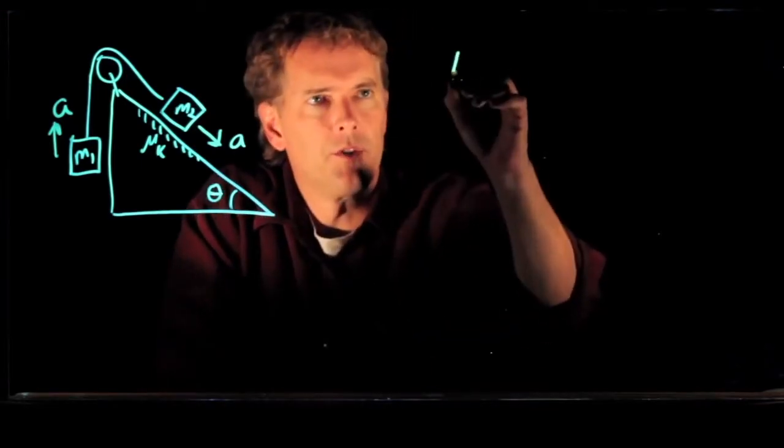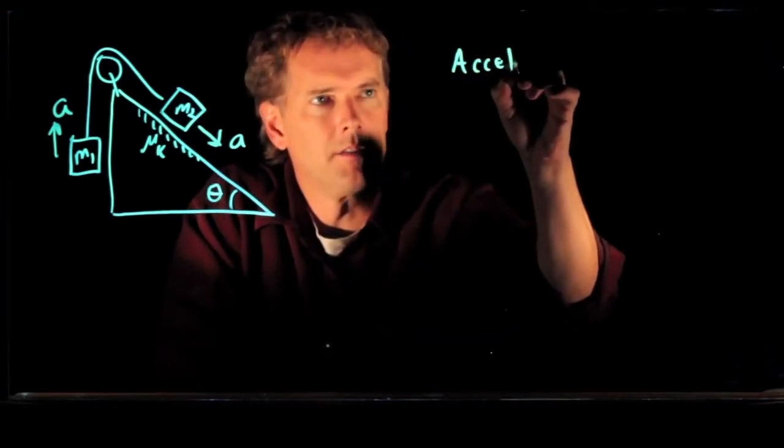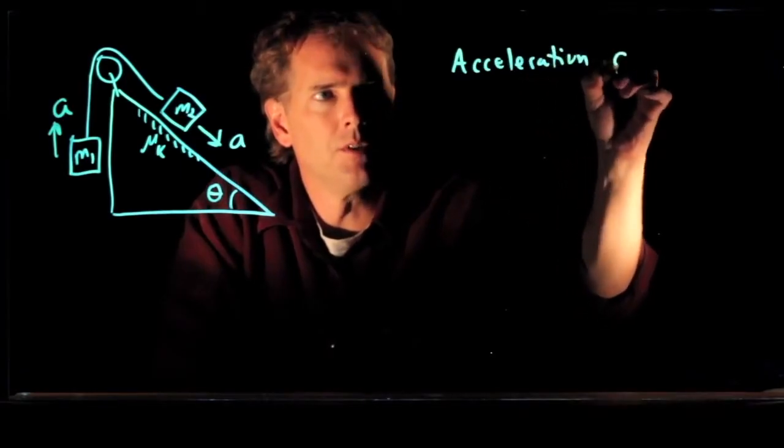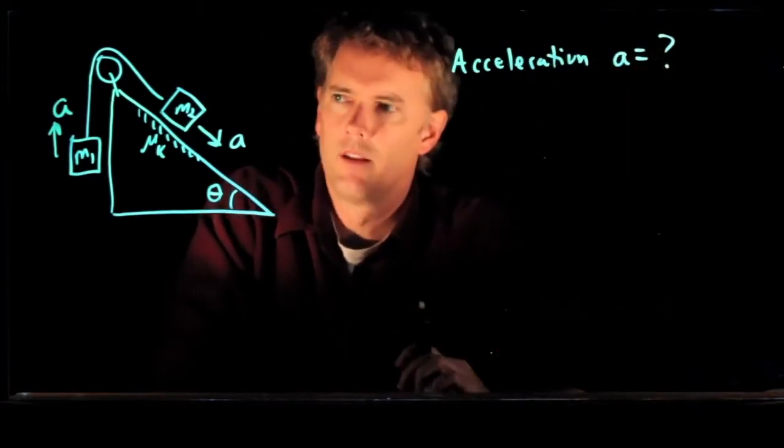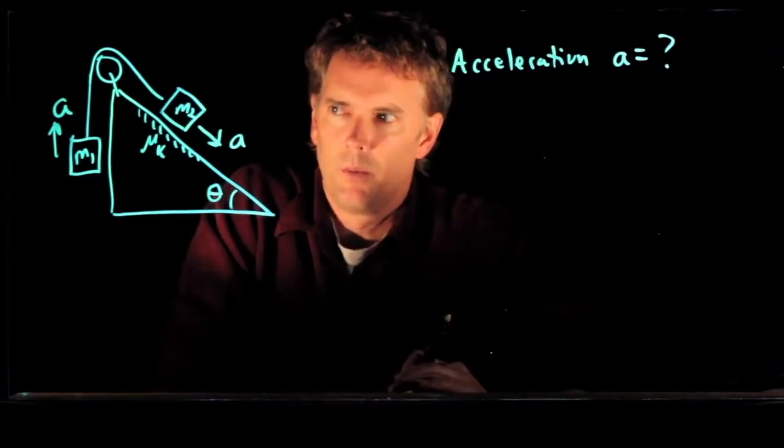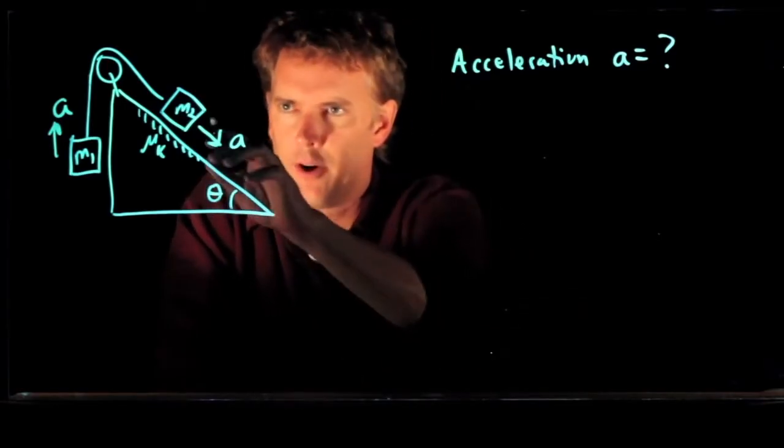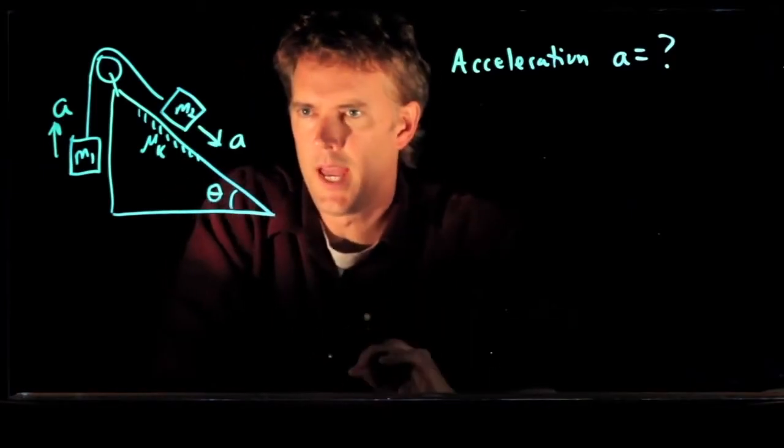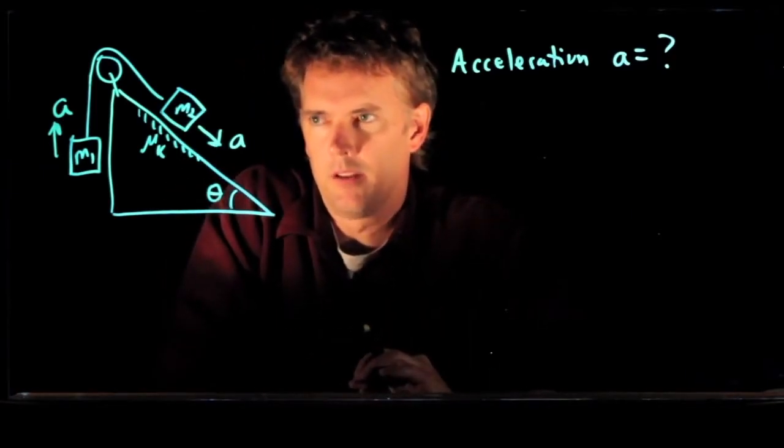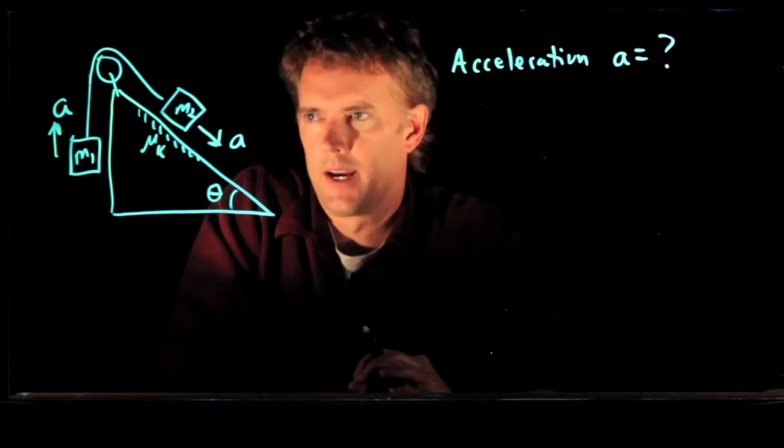Let's say that we are trying to figure out what that acceleration, A, is in fact equal to. So how do we do this? Well, we've got our picture. We have our givens, M1, M2, mu k, and theta. The next step is to draw a free-body diagram.